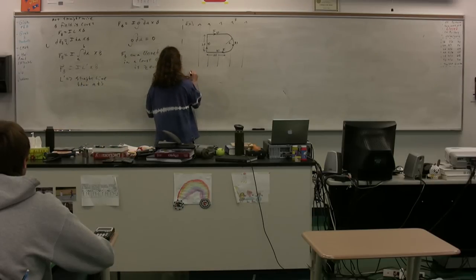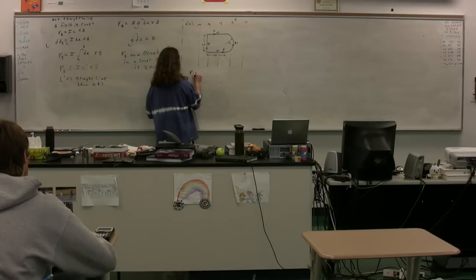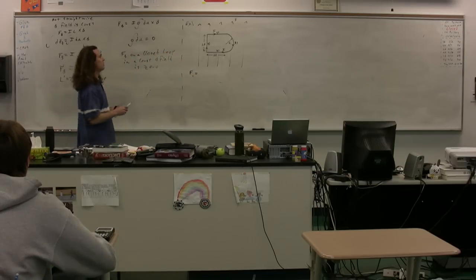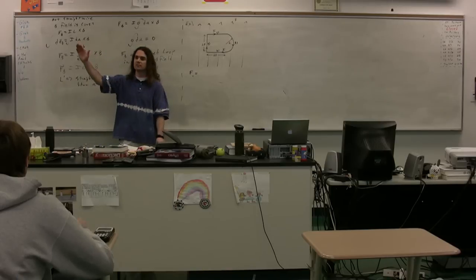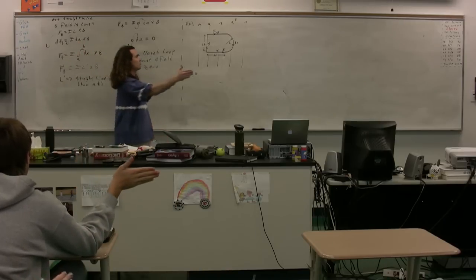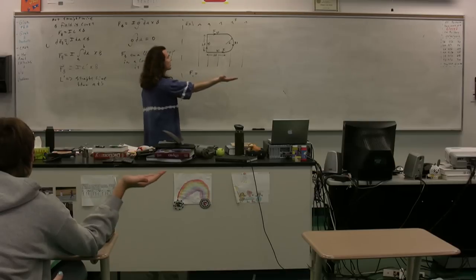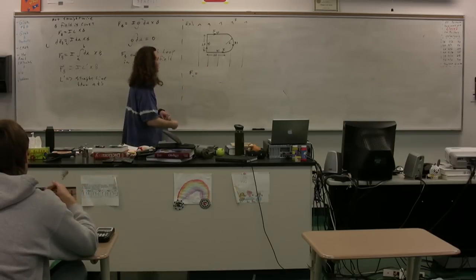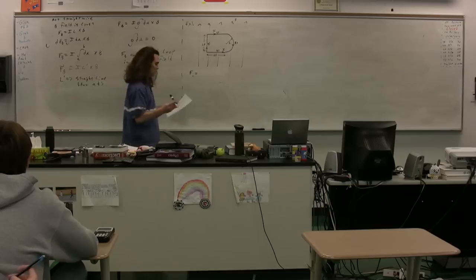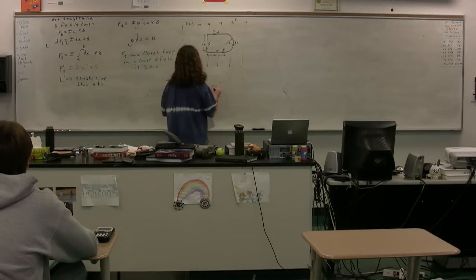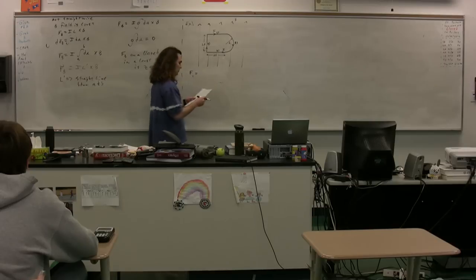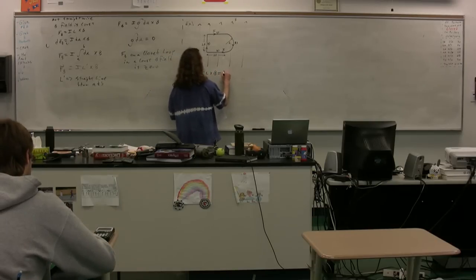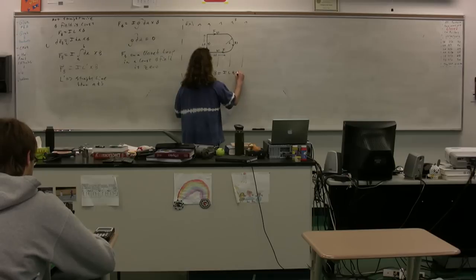The magnetic force on wire 1. First off, we should be able to figure out its direction right here. Point your fingers in the direction of the current, curl your fingers in the direction of the magnetic field. That force should be out of the page, which is the positive k direction. So we know its direction, it's in the positive k. We also know the equation: I L cross B, which is equal to I L B sine theta.